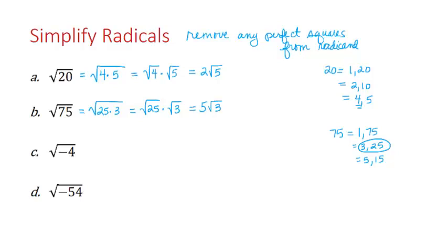The square root of negative 4 we just did, but again it was 4 times negative 1: the square root of 4 times the square root of negative 1, which is 2i.